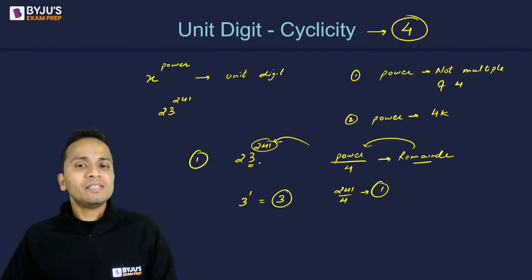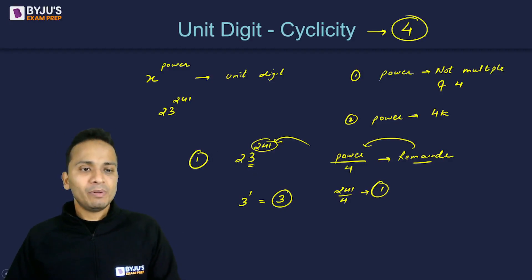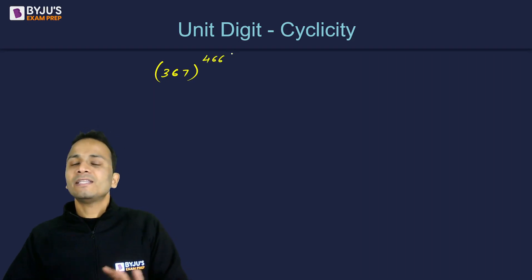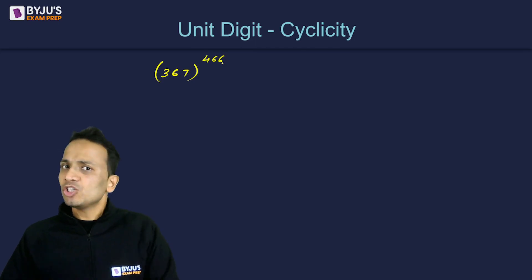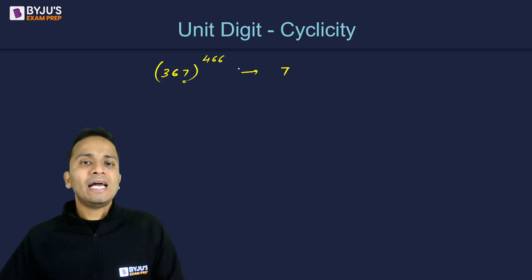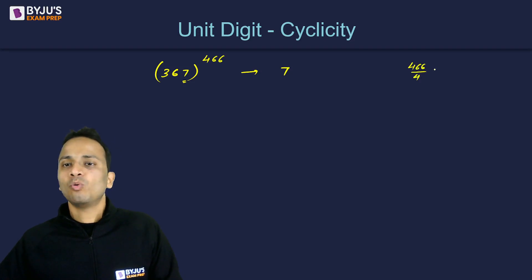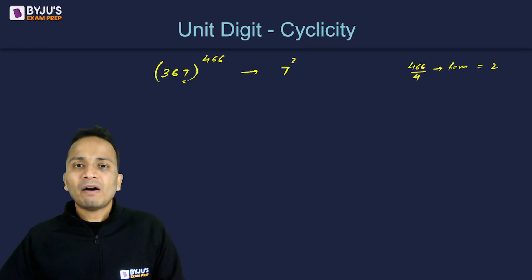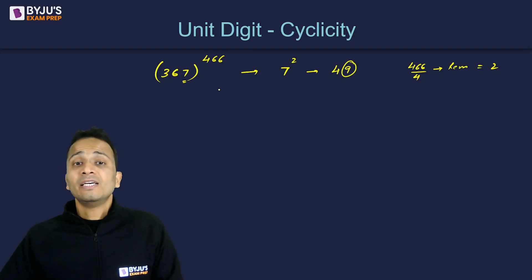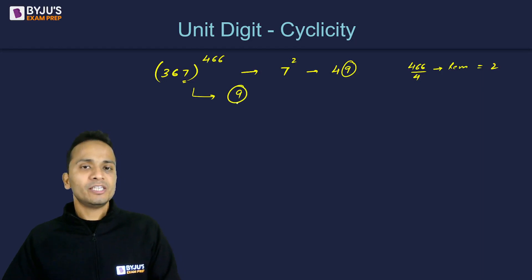So the final answer is 3 raised to the power 1, which is 3. Therefore, 3 is the unit digit of 23 raised to the power 241. Let's take one more example: 367 raised to the power 466. Since 466 is not a multiple of 4, we retain only 7 in the base, and 466 divided by 4 gives remainder 2. So 7 raised to the power 2 is 49, and the unit digit is 9.